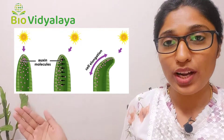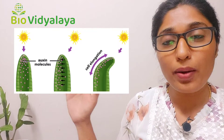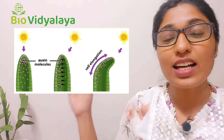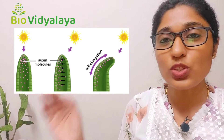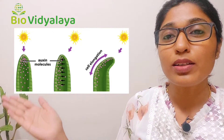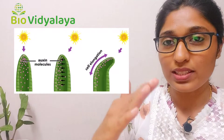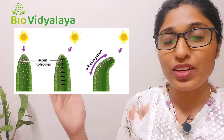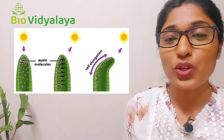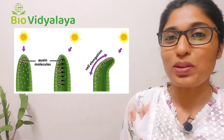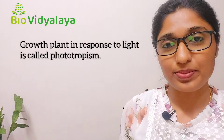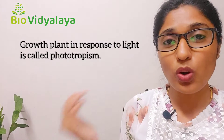Because auxin accumulates on the darker side, the growth on that side increases, causing the plant to bend towards the opposite side — that is, towards the light. This is called phototropism: the growth of plants in response to light.